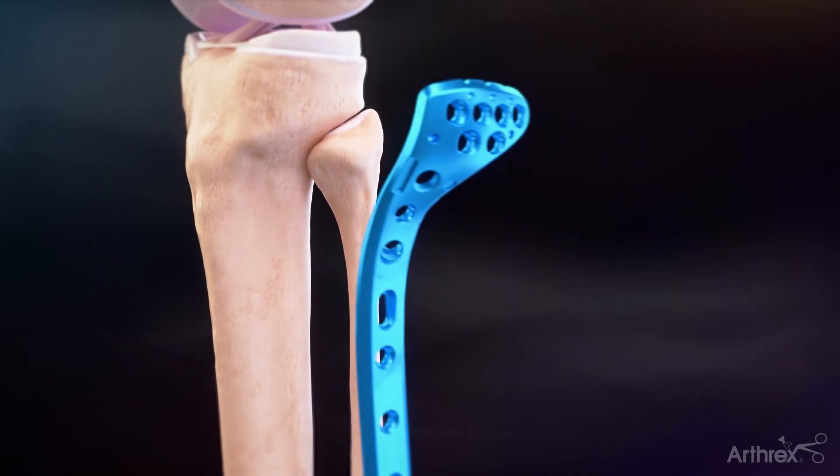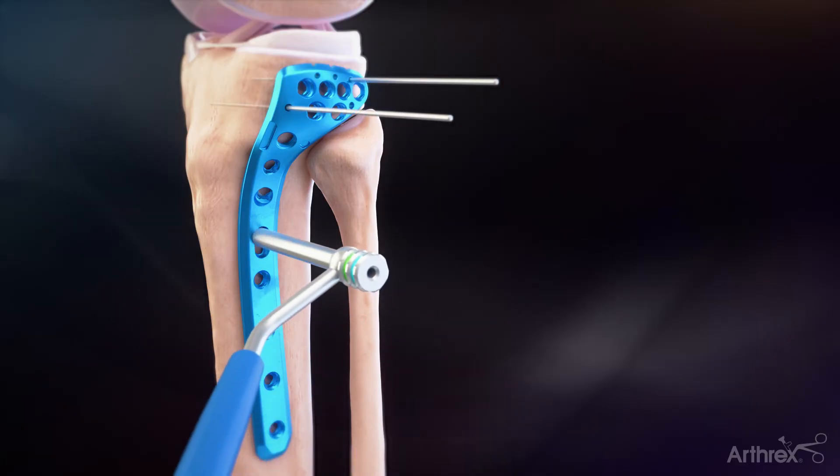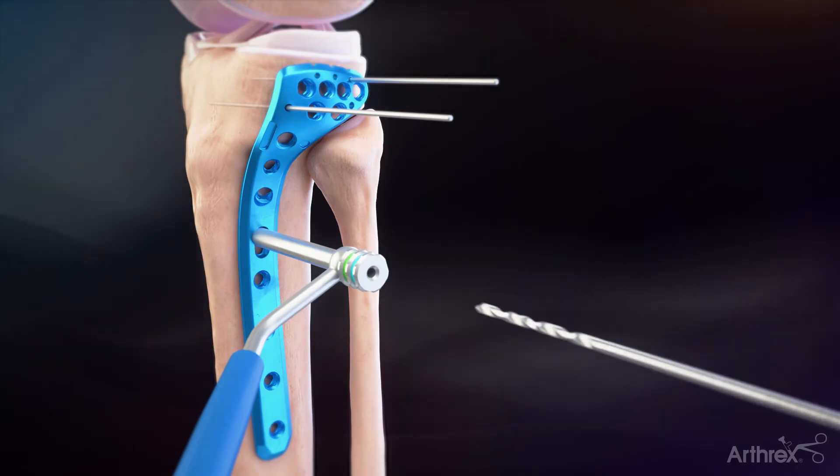For the lateral plate, a similar technique is used. The variable angle drill guide is used for 3.5 mm cortical or 3.5 mm variable angle locking screws.